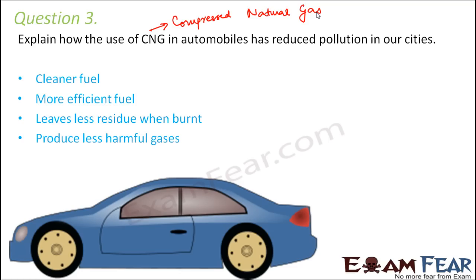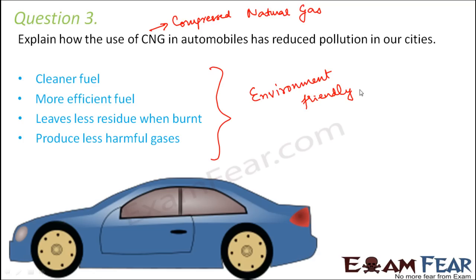With less residue, most of the fuel is converted into energy, and we have less waste material for the environment — so it is environment friendly. CNG also produces less harmful gases when burnt. In the case of coal, burning produces a lot of smoke and harmful gases that cause health problems, but comparatively, the gases produced by CNG are less harmful. Overall, CNG is very environment friendly, and that is why its use is preferred over petrol or diesel.